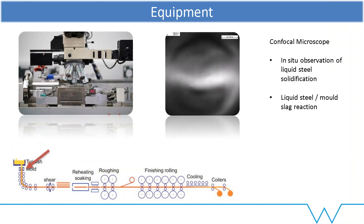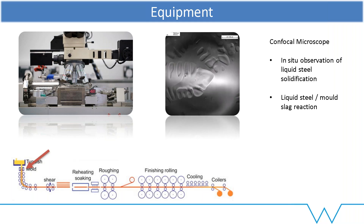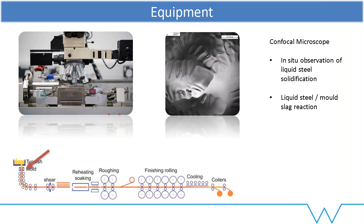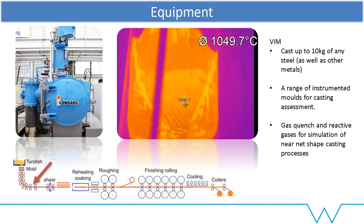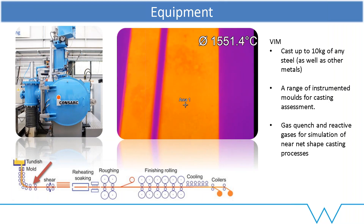We then have the confocal microscope, which lets us look at how solidification occurs — dendrite arm spacing, solidus and liquidus temperature, when inclusions form and how they agglomerate, any second phases that may form, peritectic reactions. Once we've got information about that, we can go into actual casting. For that, we typically use a VIM — 10 kilos is the typical maximum. That's a good amount for a PhD student to have a bespoke alloy for their project and carry through for multiple tests. Within this, we can instrument moulds, and we have a gas coating system for reactive gases.